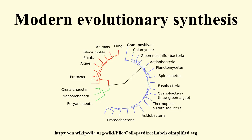The botanist G. Ledyard Stebbins was another major contributor to the synthesis. His major work, Variation and Evolution in Plants, was published in 1950. It extended the synthesis to encompass botany, including the important effects of hybridization and polyploidy in some kinds of plants.